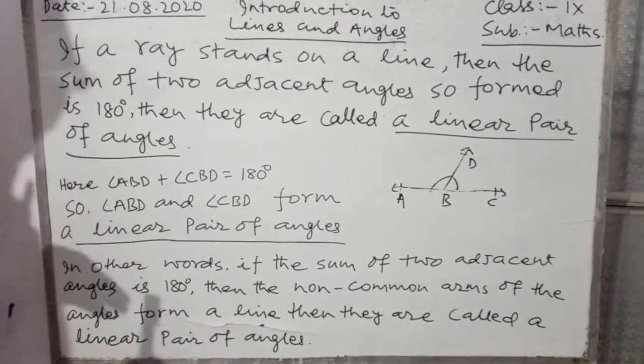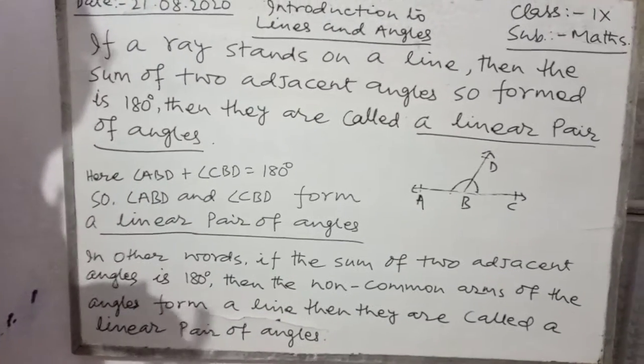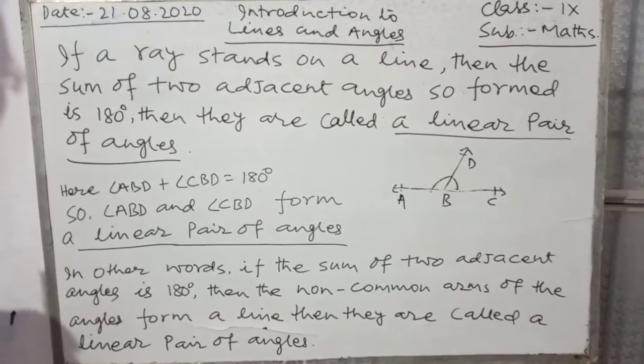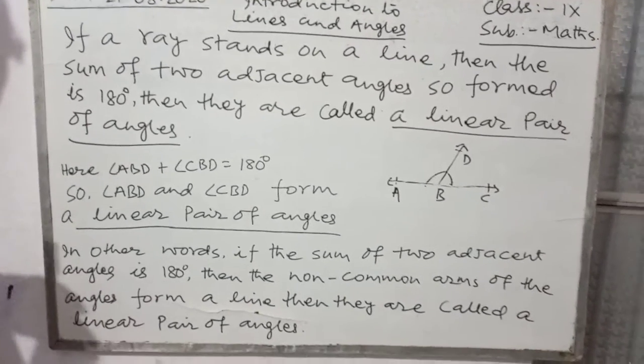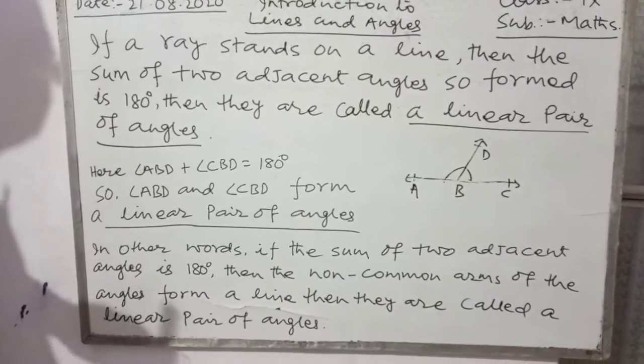Dusre shabdon me, is ko hum kya keh sakte hai: if the sum of two adjacent angles is 180 degrees, then the non-common arms of the angles form a line.